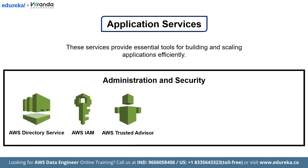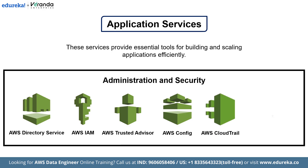Next, AWS Trusted Advisor. AWS Trusted Advisor is an online resource to help you reduce cost, increase performance and improve security by optimizing your AWS environment. Next we have AWS Config. AWS Config provides a detailed view of the configuration of AWS resources in your AWS account. It enables you to assess, audit and evaluate the configuration of your resources. Next is AWS CloudTrail. AWS CloudTrail records AWS API calls for your account and delivers log files to you. It provides visibility into your activity by recording actions taken on your account.